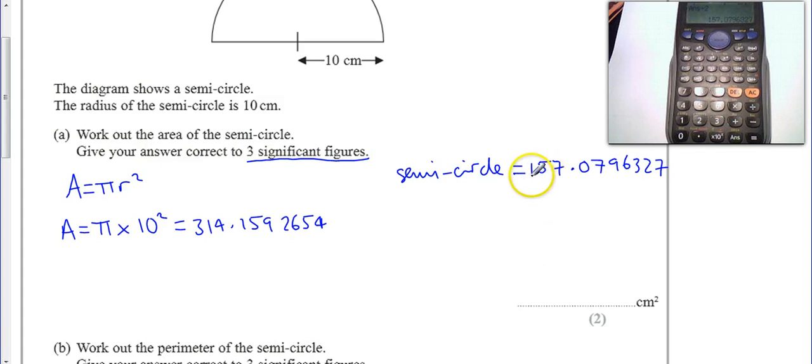So I'm going to go ahead, first three digits, 157. Yeah, that's my area.